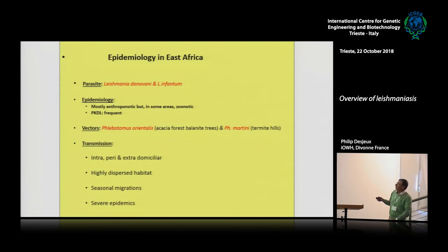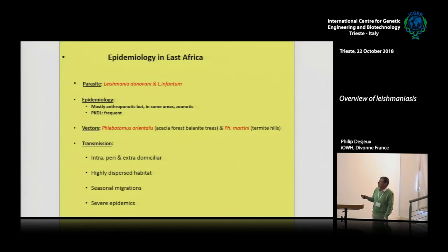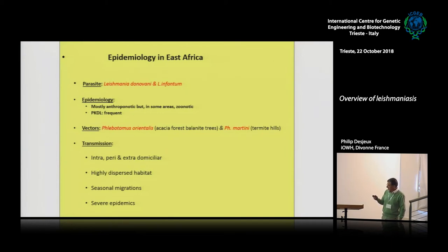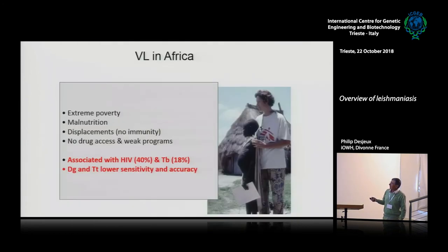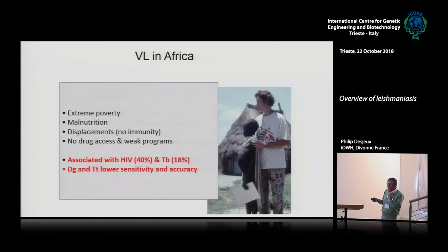I conclude briefly on Africa, where the situation is much more complex because we have two different parasites in East Africa: Leishmania donovani and Leishmania infantum. You have different vectors, mainly anthroponotic but also zoonotic transmission. It's a very dispersed habitat — not only intra-peri-domiciliary but extra-domiciliary transmission. We have seasonal migration and epidemics: a complex situation.